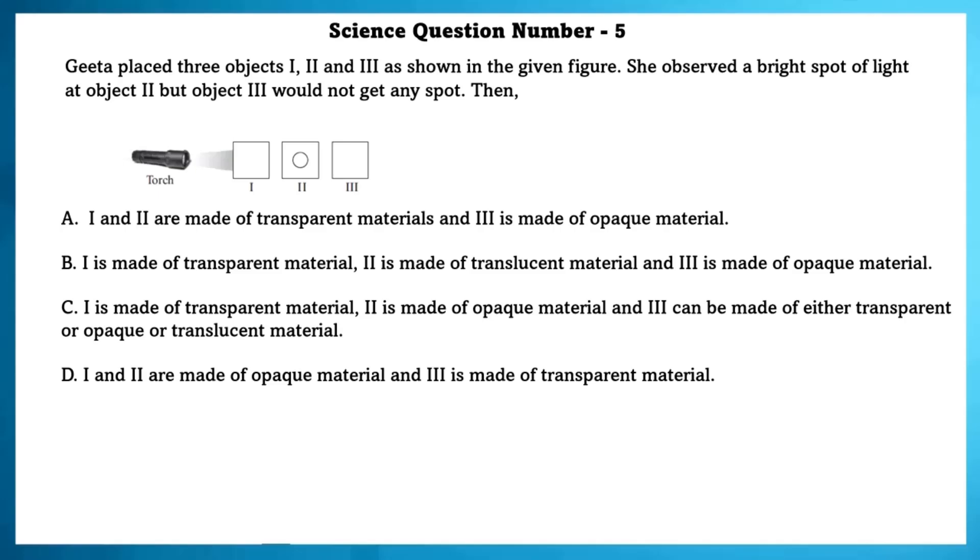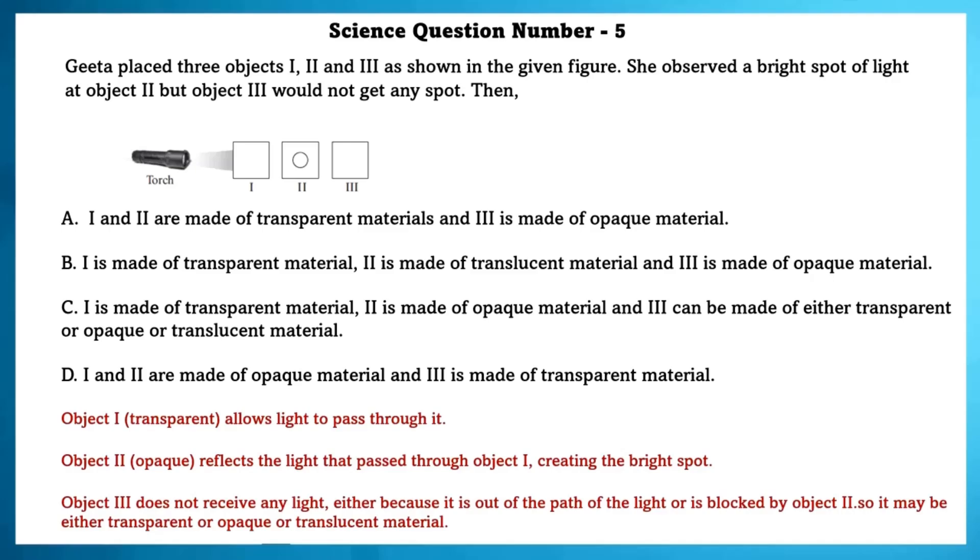Science Question Number 5. Geeta placed 3 objects 1, 2 and 3 as shown in the given figure. She observed a bright spot of light at object 2 but object 3 would not get any spot. Then, object 1 is transparent. It allows light to pass through it. Object 2 is opaque. It reflects the light that is passed through object 1, creating the bright spot. Object 3 does not receive any light, either because it is out of path of the light or is blocked by object 2. So it may be either transparent or opaque or translucent material.